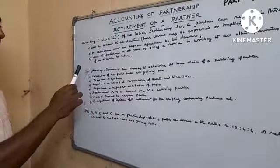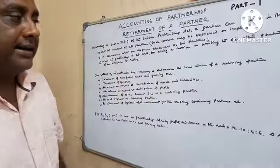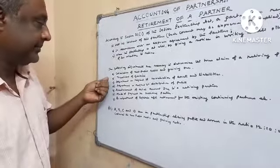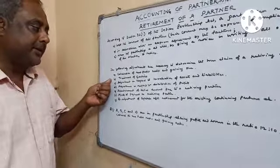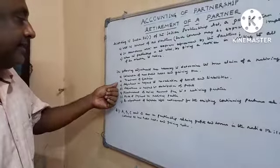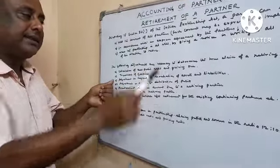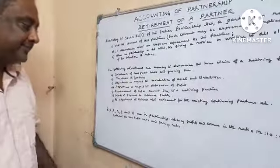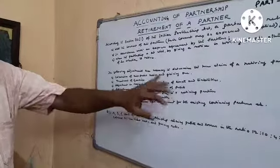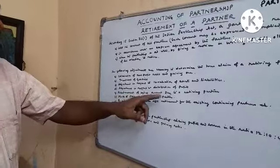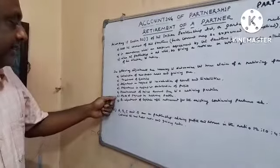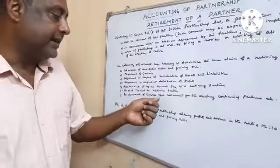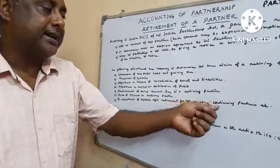Now, what are the adjustments necessary to determine the true claim of a retiring partner? First, we have to calculate new profit sharing ratio and gaining ratio. Second, treatment of goodwill — as in admission, treatment of goodwill is also necessary here. Third, adjustment in regard to revaluation of assets and liabilities, as we did in admission. Number 4, adjustment in regard to distribution of profit. Number 5, ascertainment of total amount due to a retiring partner. Number 6, mode of payment to a retiring partner. Number 7, readjustment of capital after retirement for the existing continuing partners.